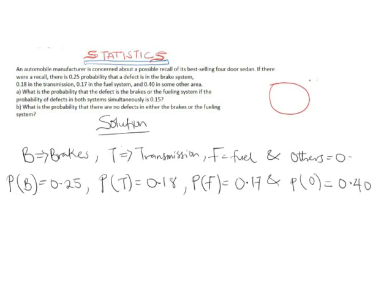Going back to set theory for a demonstration: let's say this is the brake system circle and this is the fuel system circle. The brake system has probability 0.25 and the fuel system 0.17 in this part of the question. The overlapping region — where both systems are defective at once — is called an intersection. In set notation, this is B ∩ F.